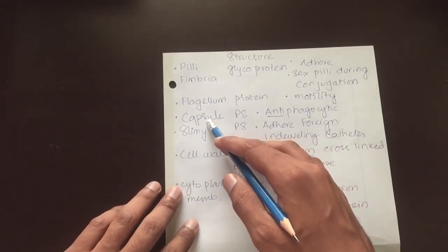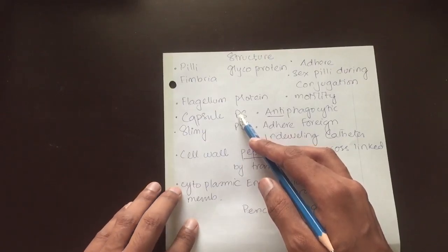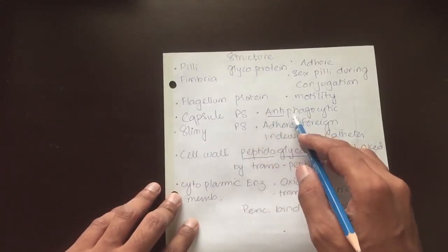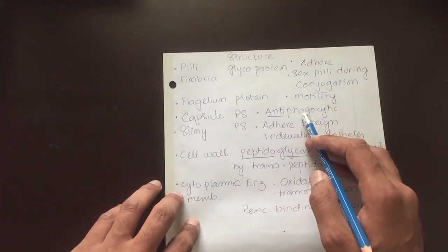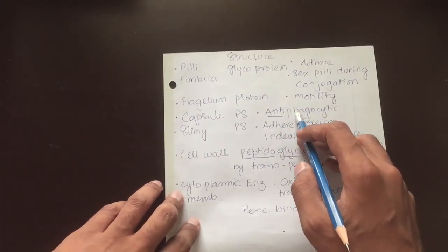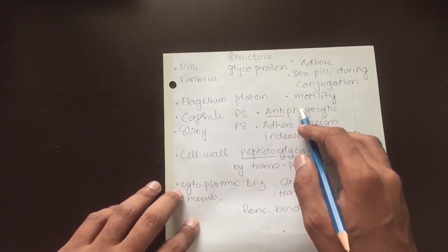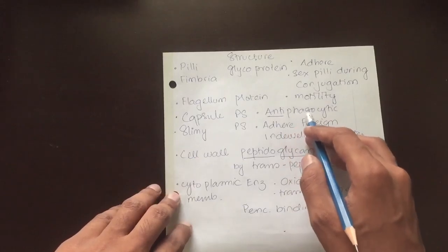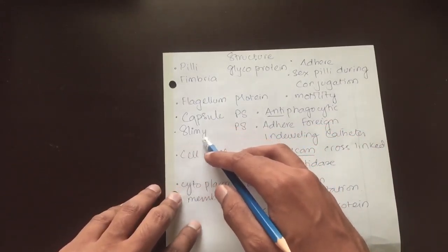We find a capsule. Capsule is a polysaccharide and it is antiphagocytic. It helps to prevent phagocytosis and evade immune response.